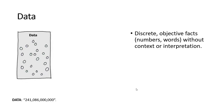First, data is simply discrete objective facts, words, numbers — not in context and not interpreted. So the number 241 billion, 86 million is data.